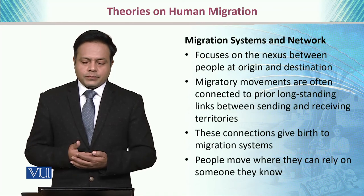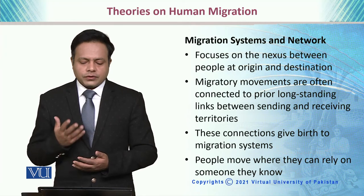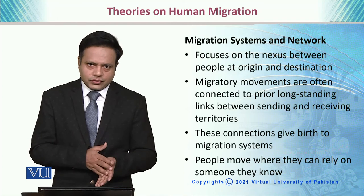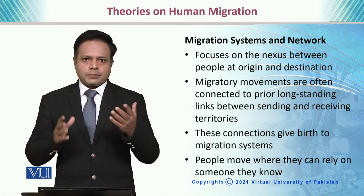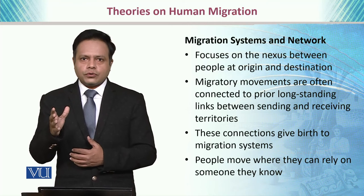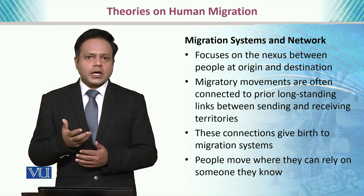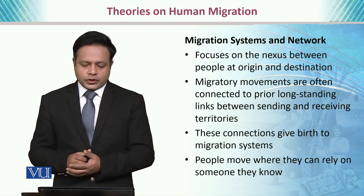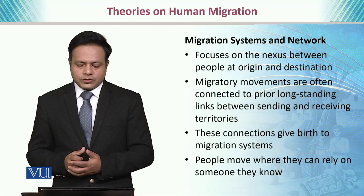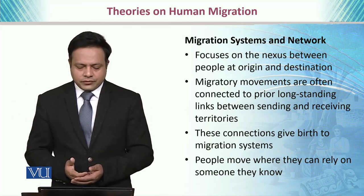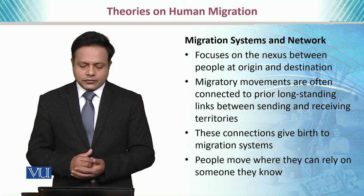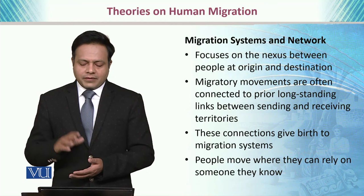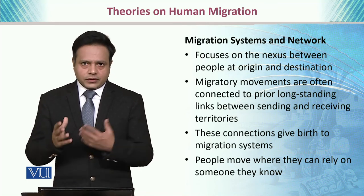We also have the migration systems and network theory, which focuses on the nexus between people at the origin and at the destination. For example, if a person has gone to Europe, he is more likely to call his other relatives to Europe as well. This creates a nexus of communities, and migratory movements are often connected to prior longstanding links between the sending and receiving territories, giving birth to the migration system.